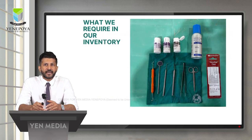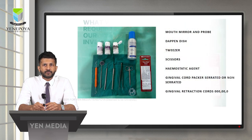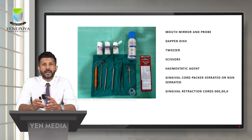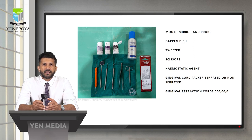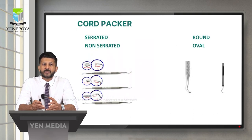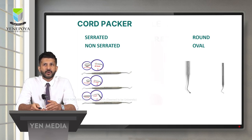The instruments required chairside for chemico-mechanical gingival retraction include a mouth mirror and probe, a dappen dish, tweezers, scissors, hemostatic agent, gingival cord pack, and a gingival cord packer — which can be either serrated or non-serrated — and the gingival retraction cords in triple zero, double zero, or zero sizes. For the cord packer, serrated round is preferred as it is more convenient for placing the cord.